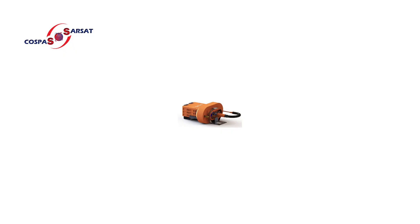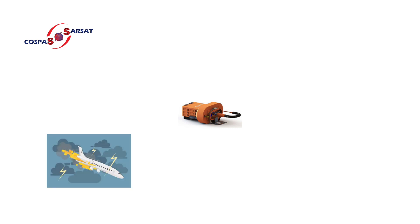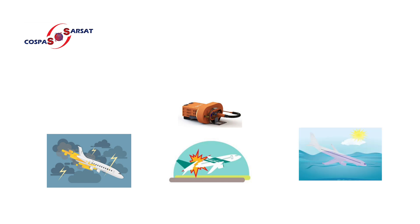A suitably configured ELT is an integral component of the international satellite system for search and rescue, which when activated manually, automatically by immersion in water, or as a result of high G-force on impact, transmits a distress signal which can be detected by non-geostationary satellites and then located precisely by either or both of GPS trilateration and Doppler triangulation.